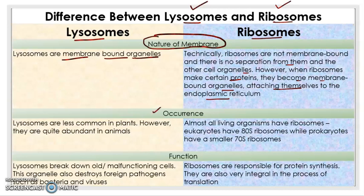The second point is on the basis of occurrence. Lysosomes are less common in plants; however, they are quite abundant in animals. This is a very important point — lysosomes are less common in plants but quite abundant in animals. As for ribosomes, almost all living organisms have them, whether it is a plant cell or an animal cell.